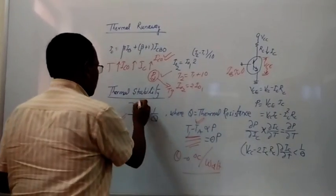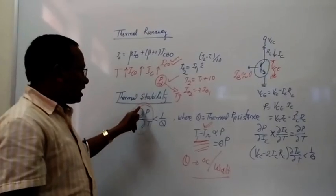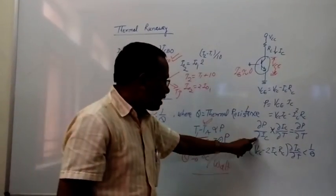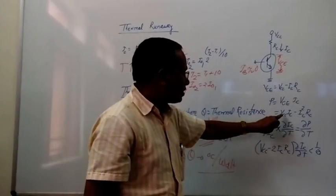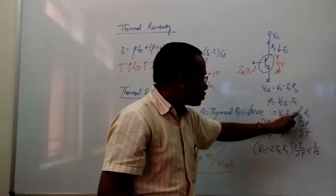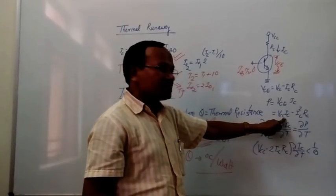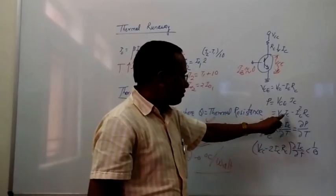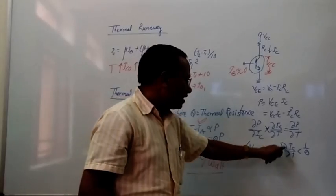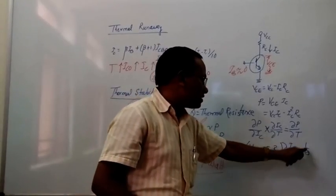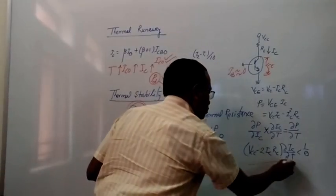Now let us derive the practical condition. ∂P/∂T = (∂P/∂IC)·(∂IC/∂T). Differentiating P = VCC·IC − IC²·RC with respect to IC gives ∂P/∂IC = VCC − 2·IC·RC. Therefore the condition becomes: (VCC − 2·IC·RC)·(∂IC/∂T) < 1/θ.